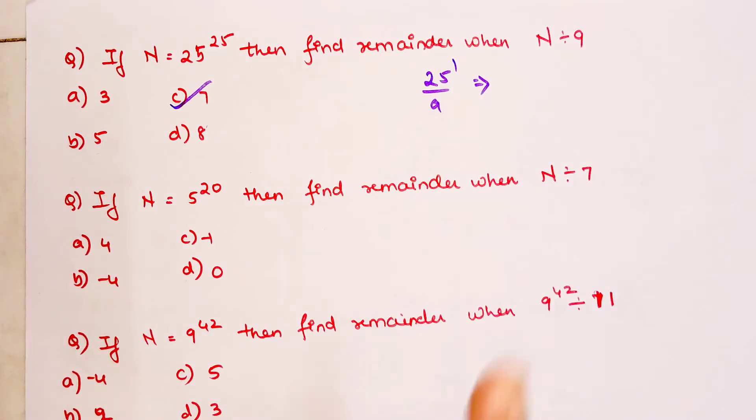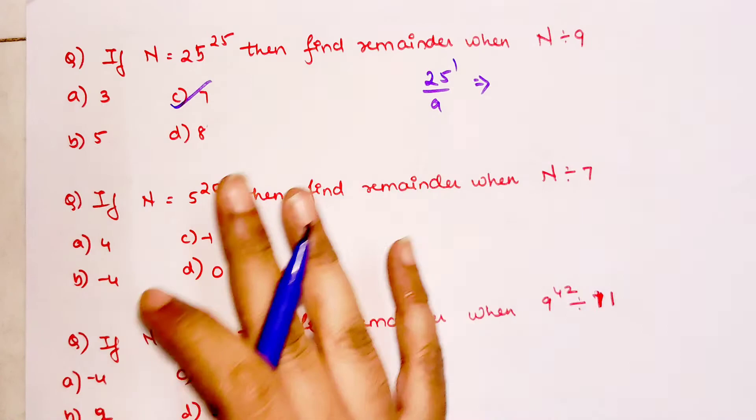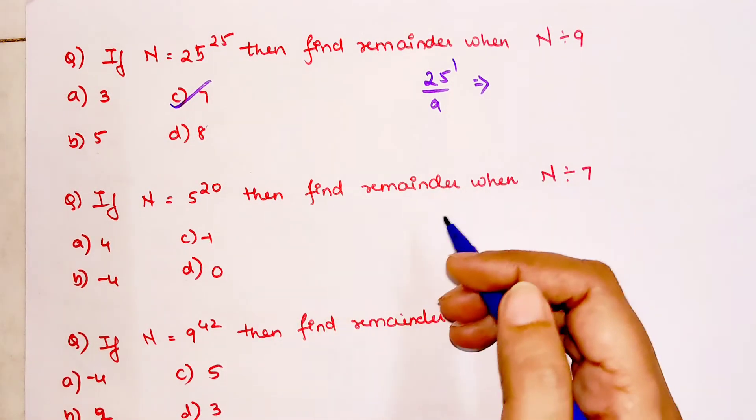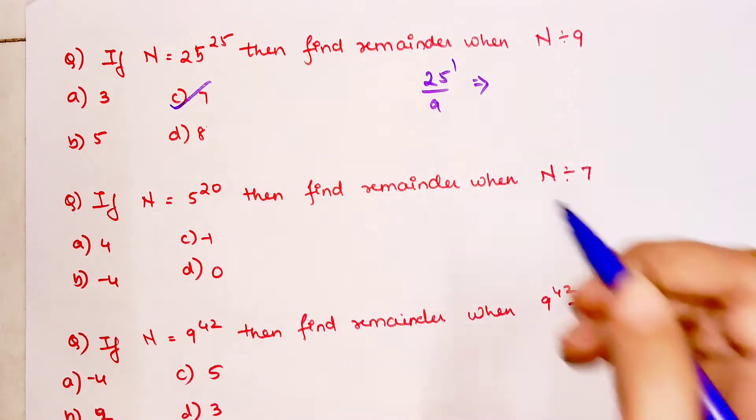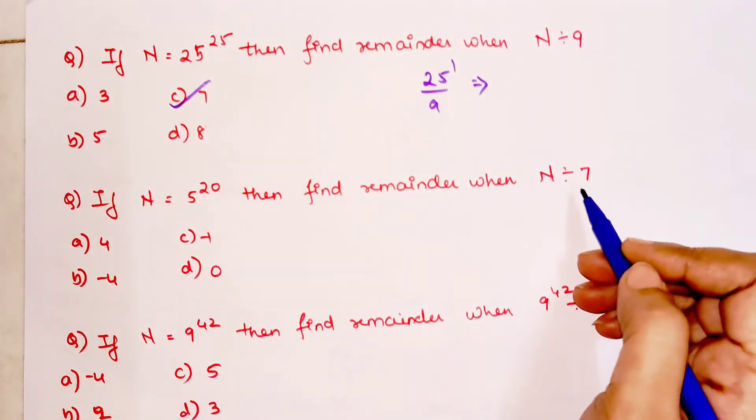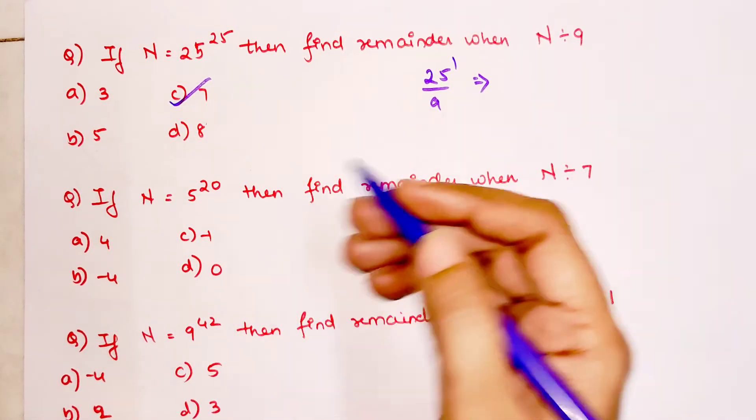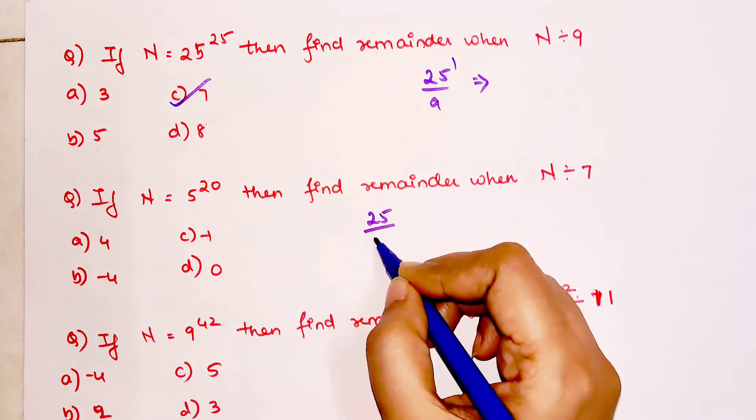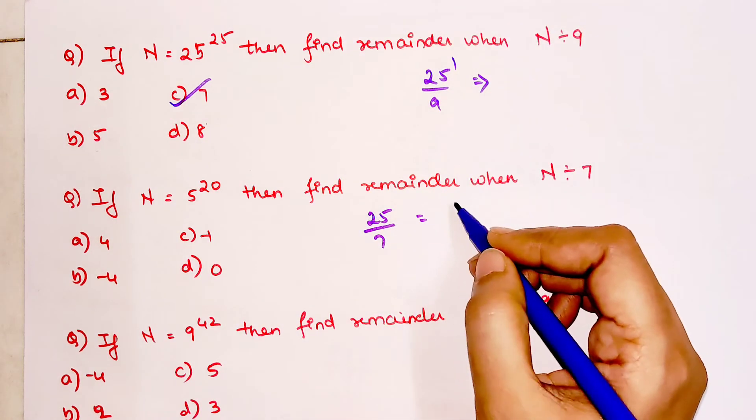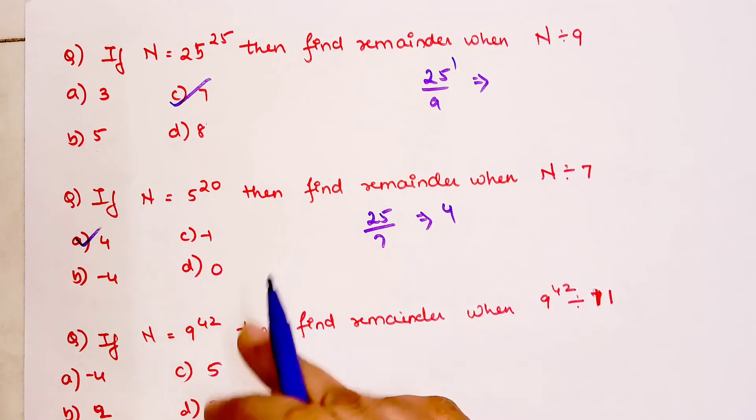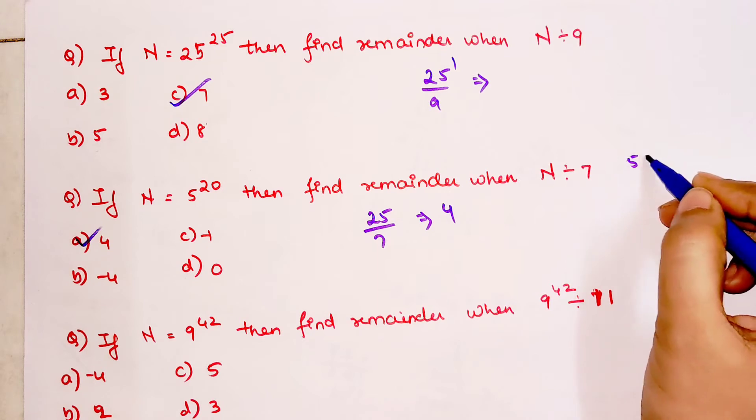Please understand, when you are looking for remainder, you do not bother much about your quotient. You are just focusing on the subtraction or the leftover value. Now here you have 5 raised to 20 divided by 7. So 5 raised to 20, and 20 is an even power. So this will be 25 divided by 7. So that gets you the answer as remainder as 4.